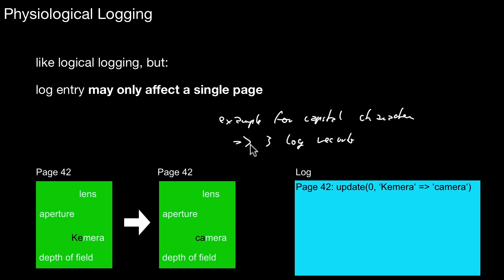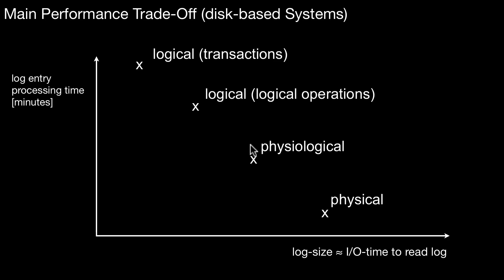Those are the three most important variants in logging. Now we need to make a decision: which logging variant are we going to use? That depends heavily on whether it's a main memory system or a disk-based database system. If you have a disk-based database system, you have the following trade-off. On the horizontal axis, we have the size of our log file, which roughly corresponds to the IO time to read the log. The log is organized sequentially — we just append to it — so size correlates strongly to sequential read IO time.